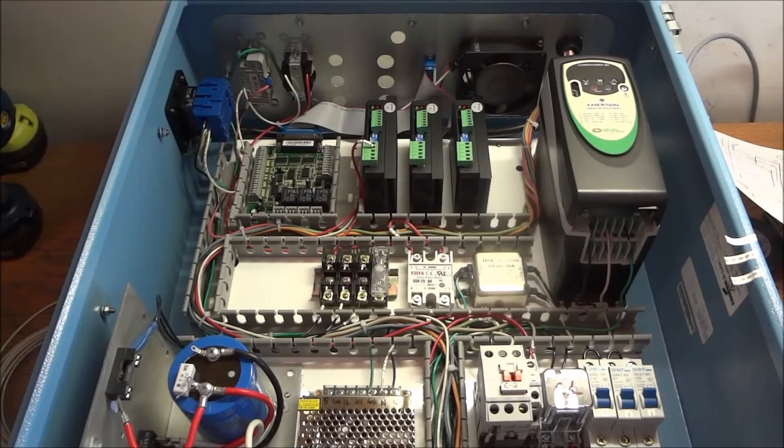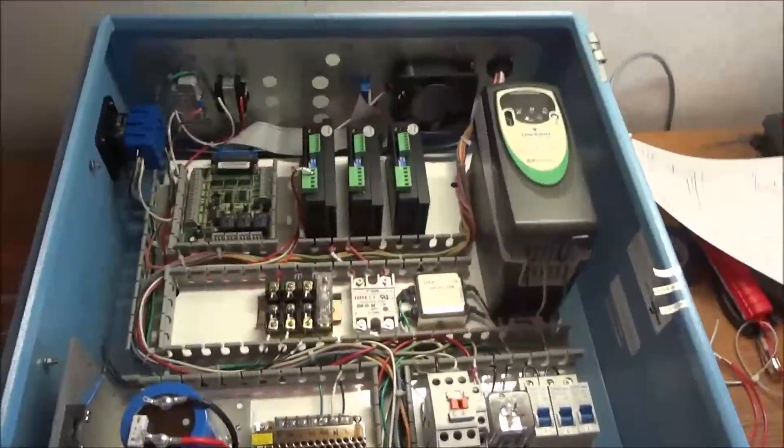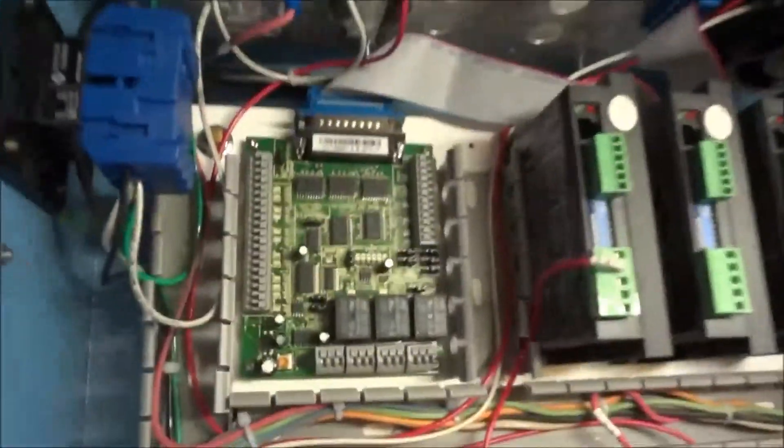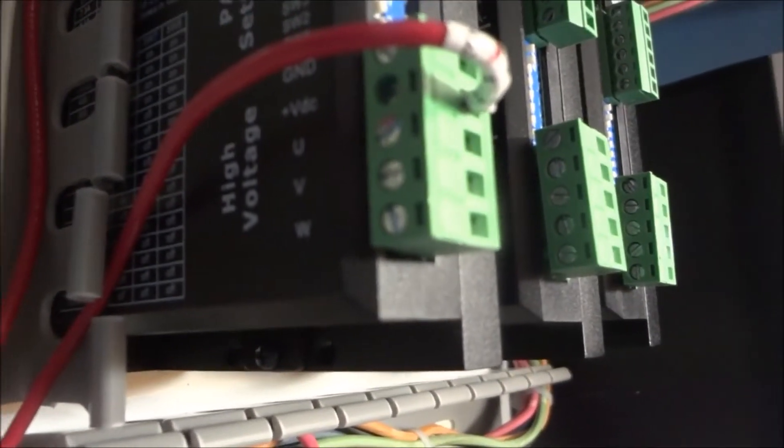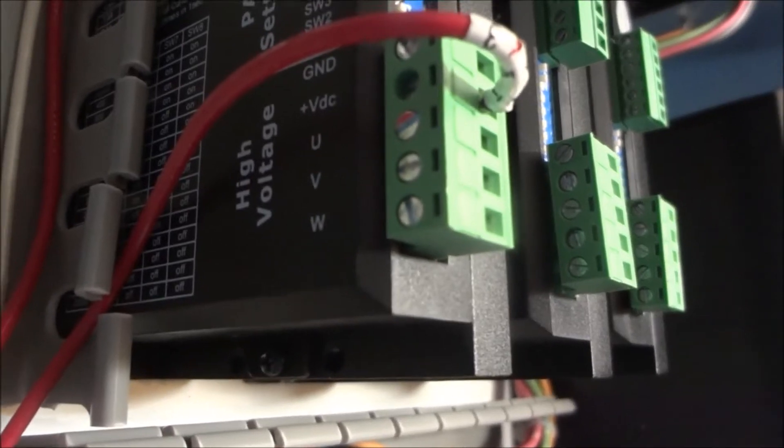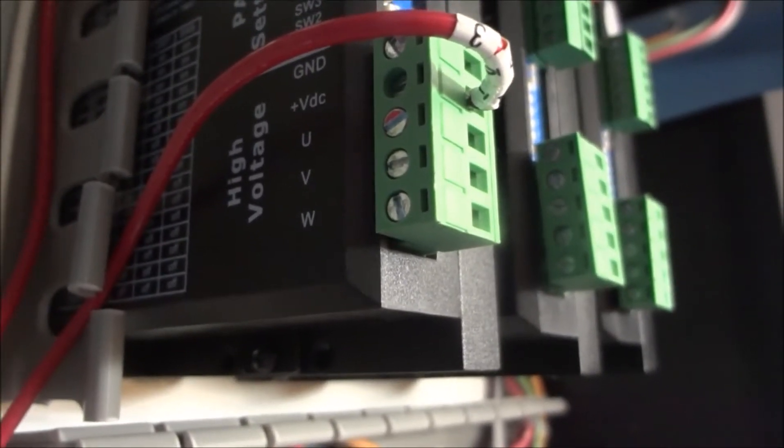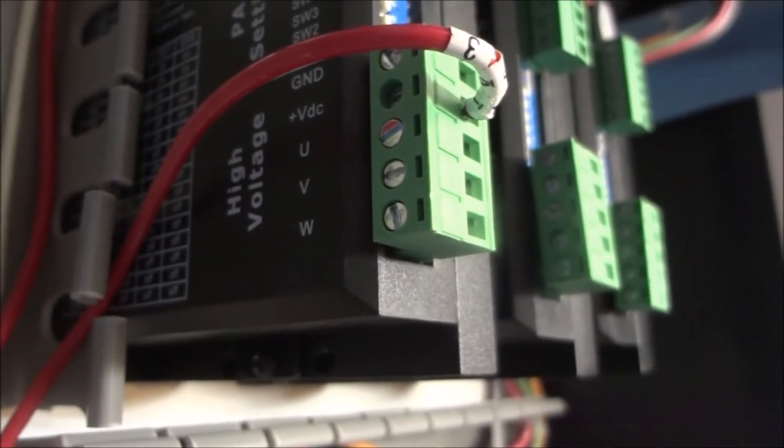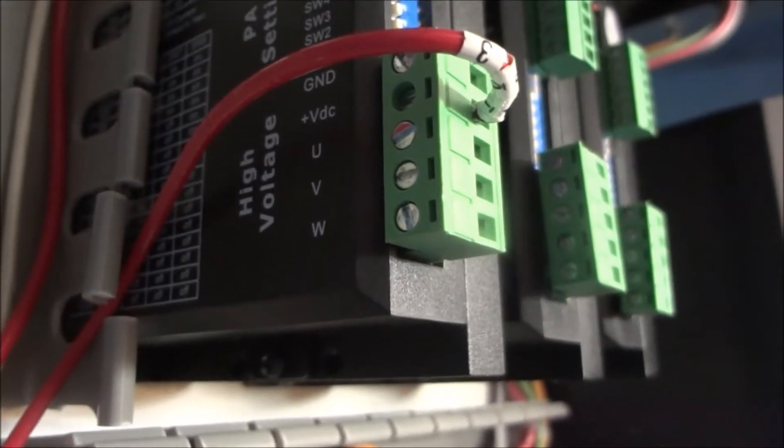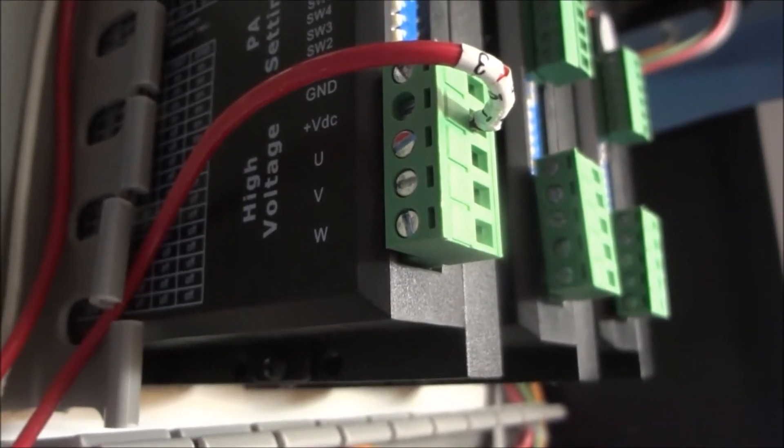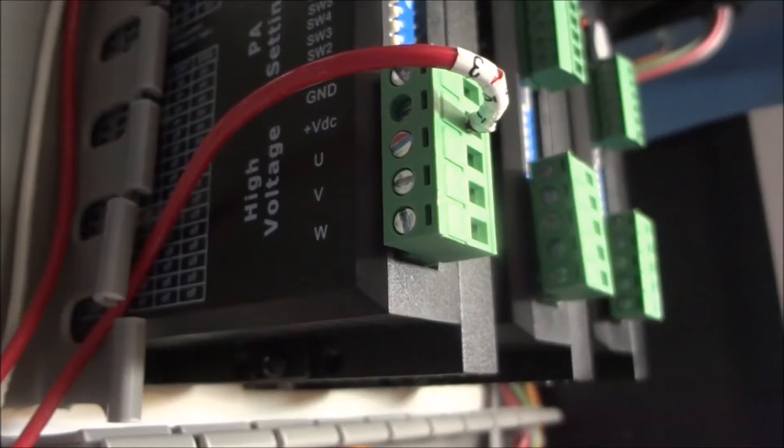Let me see if I can get a shot of this so you can see. You can see there's the voltage. The top one is ground, the next one is volts DC, and then U, V, and W go out to the stepper motors. We'll be connecting those later.